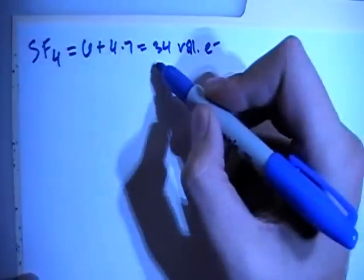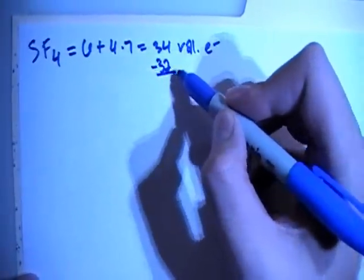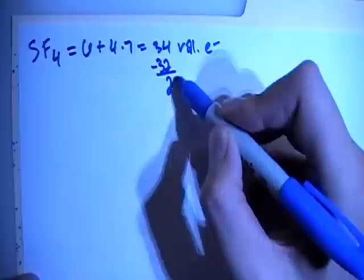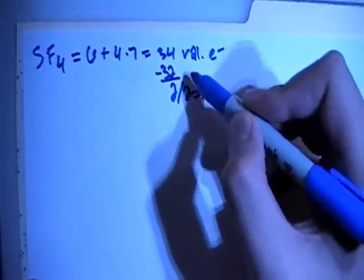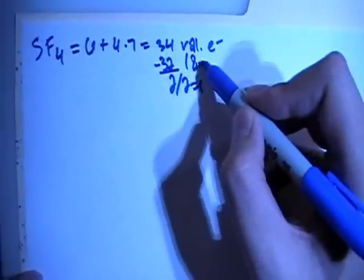We subtract out the largest multiple of 8, which is 32, giving us 2 electrons remaining. Divide that by 2 to get 1 pair, and 32 equals 8 times 4.